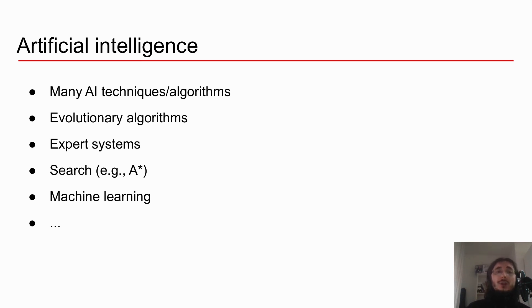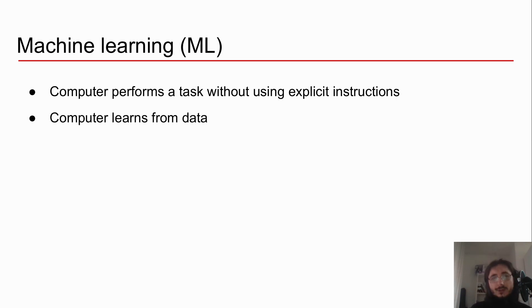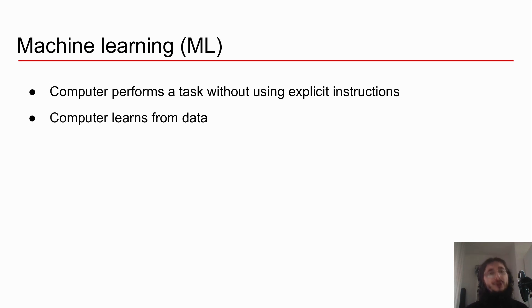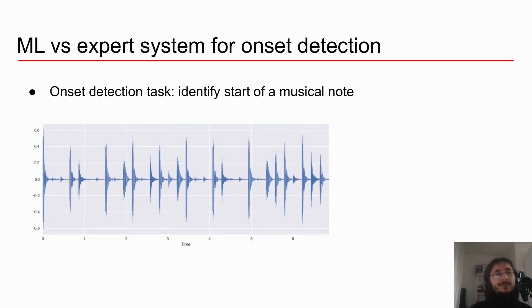Artificial intelligence has loads of different techniques and algorithms, and machine learning is just one subset of artificial intelligence. So now let's focus on machine learning. In machine learning, you have a computer that performs tasks without using explicit instructions — the computer is able to learn from data. As developers or researchers, we don't instruct the computer with specific rules; rather, we let the ML program figure out the rules by itself using data.